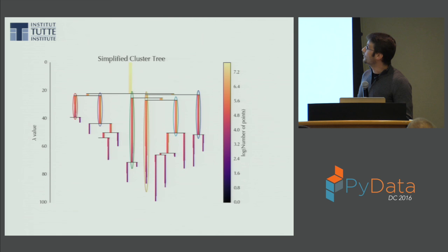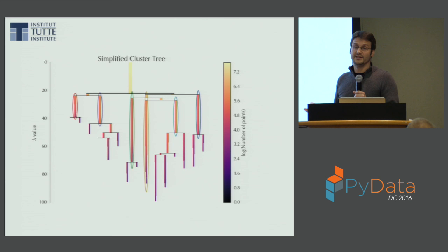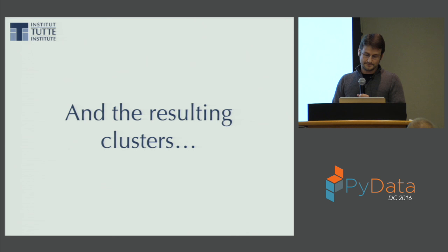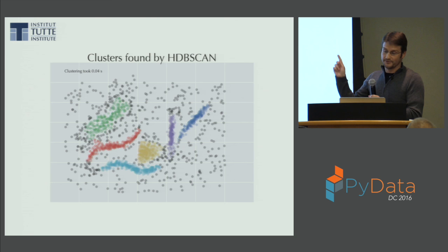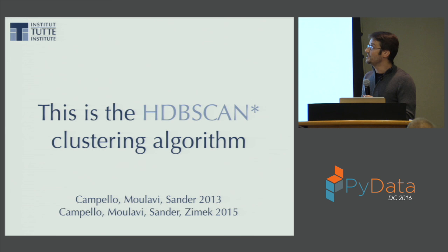This is what the algorithm picks out as the clusters. There happens to be a single flat cut that picks out all of those clusters here, but on a different dataset with clusters of wildly varying density, it can pick out a cluster high in the tree and another low in the tree where no single flat cut would work — it handles variable density cuts very nicely. The result is what I wanted when I first stared at the data: black noise points are considered outliers, and the rest are very tight clusters. This is the HDBSCAN clustering algorithm, from papers by Campello, Moulavi, Sander, and Zimek in 2013 and 2015.